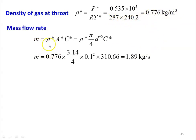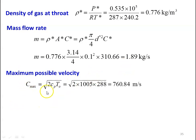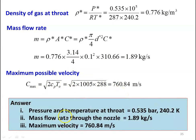Mass flow rate M equal to rho star into A star into C star equal to rho star into pi by 4 D star square into C star. Substituting: 0.776 into 3.14 divided by 4 into 0.1 square into 310.66 equal to 1.89 kilograms per second. Maximum possible velocity: C maximum equal to square root of 2 CP into TO, which is square root of 2 into 1005 into 288 equal to 760.84 meters per second. Answer: pressure and temperature at throat section 0.535 bar and 240.2 Kelvin, mass flow rate 1.89 kilograms per second, maximum velocity 760.84 meters per second.